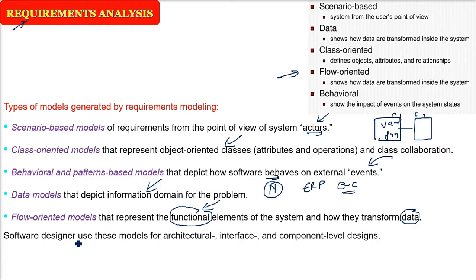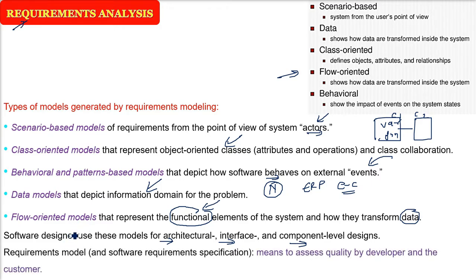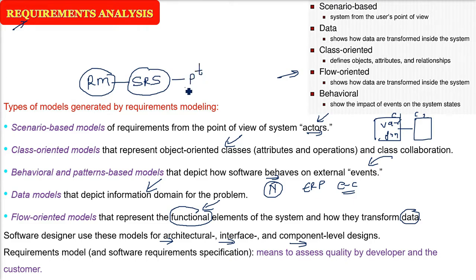On the basis of this requirement modeling, the software designer — the person who is going to design the software — will use these models, all of them or few of them, for the design purpose. For example, architectural, interfacing, and component-level designs will be done on the basis of, or with help from, all these requirement modeling. So requirement modeling — or requirement engineering — for example, if you have created a software requirement specification (SRS), once you have done this it will be helpful to you and the customer or stakeholder. The quality of the software can be assessed, verified, and validated by means of the requirement model which has been created.